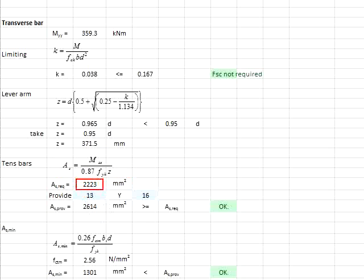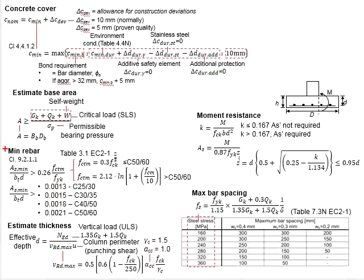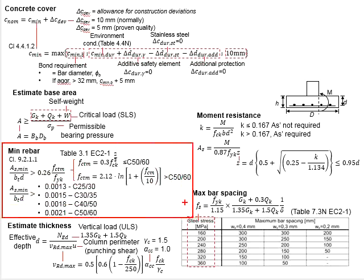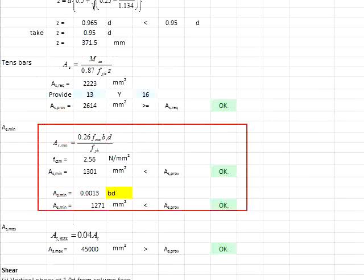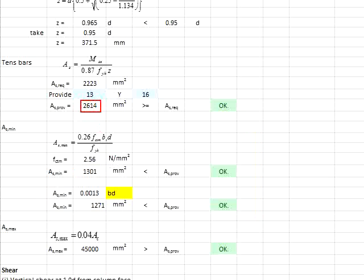Substituting into the formula, you get the amount of reinforcement bar required. You require 13 units of Y16 bars, which gives you the total reinforcement area. The provided area of reinforcement bar must be greater than the required. Next, check for the minimum amount of reinforcement bar — substituting into the formula gives the minimum, and the provided bar area is greater than the minimum, so it is considered acceptable.